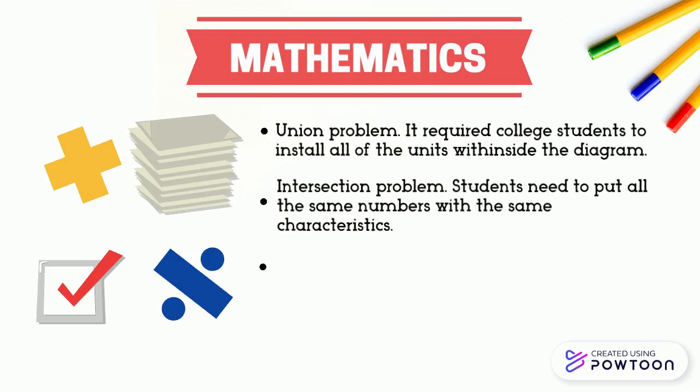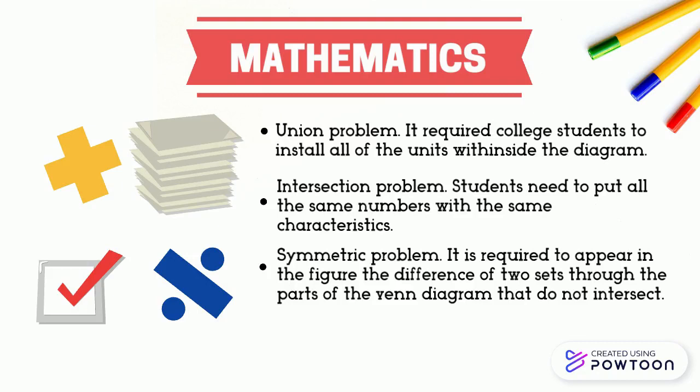Venn Diagram is used in dealing with the distinction of one set from another. Their similarity is an intersection, the probability of one event happening, as well as identifying tautologies and fallacies. On the other hand, symmetric problems use Venn Diagram to measure how similar one set is from another without having an intersection.